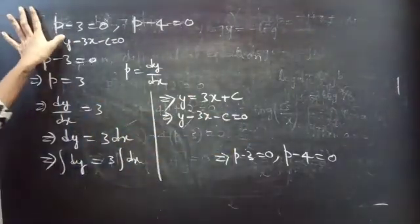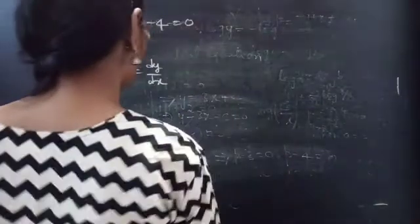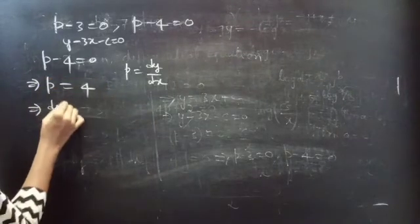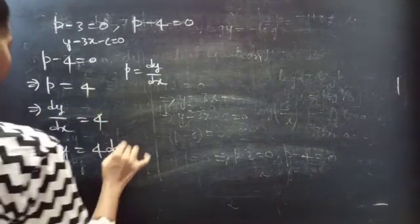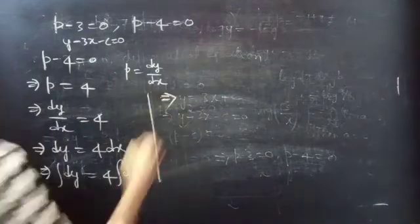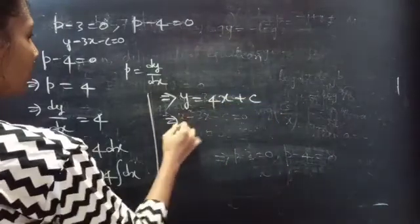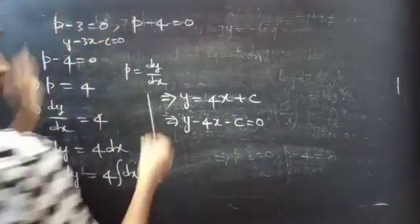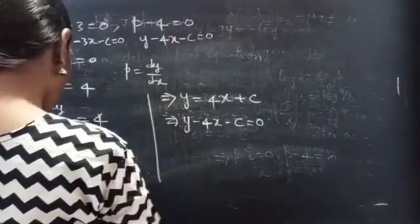Now consider the second one: P minus 4 equals to 0. You can write this as P equals to 4. Now put P equals to dy by dx. Then dy by dx equals to 4. Then dy equals to 4 into dx. Now perform integration: integral dy equals to 4 into integral dx. Then y equals to 4x plus integral constant c. Then y minus 4x minus c equals to 0. So this is the solution to P minus 4 equals to 0.